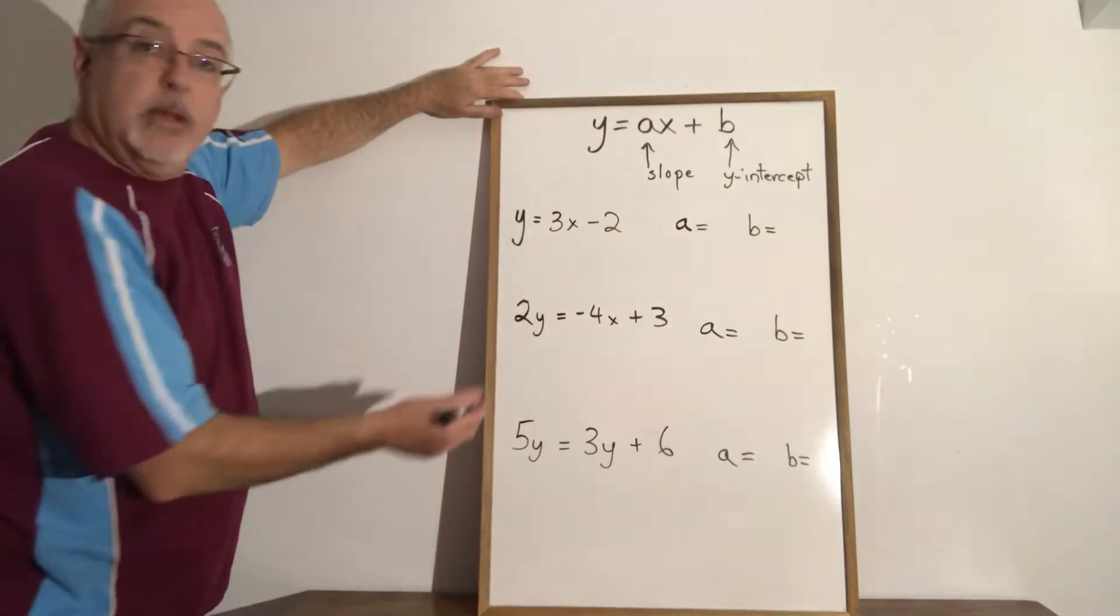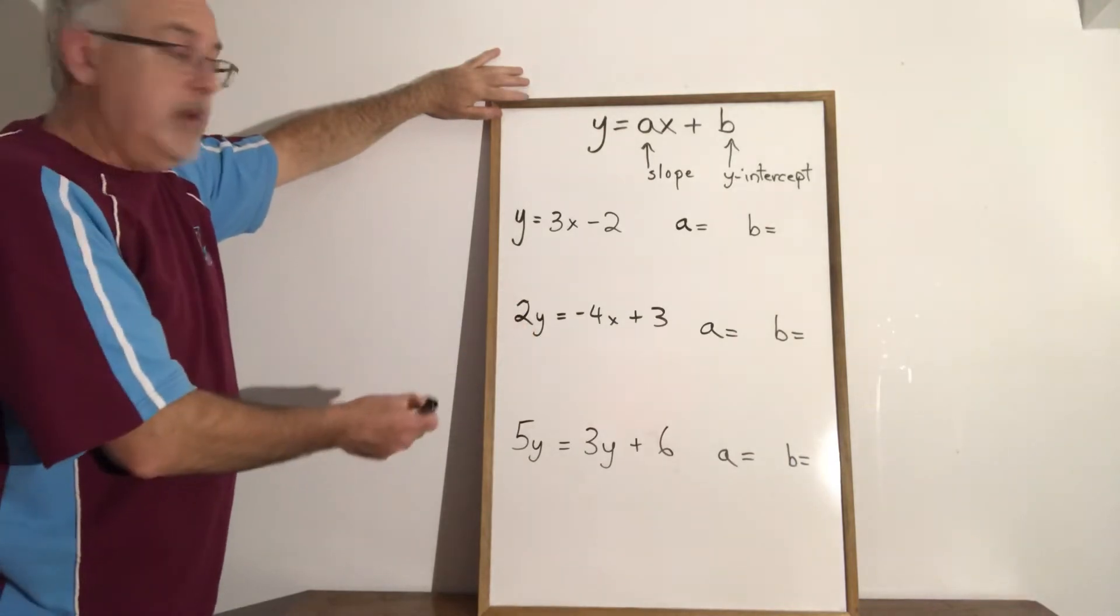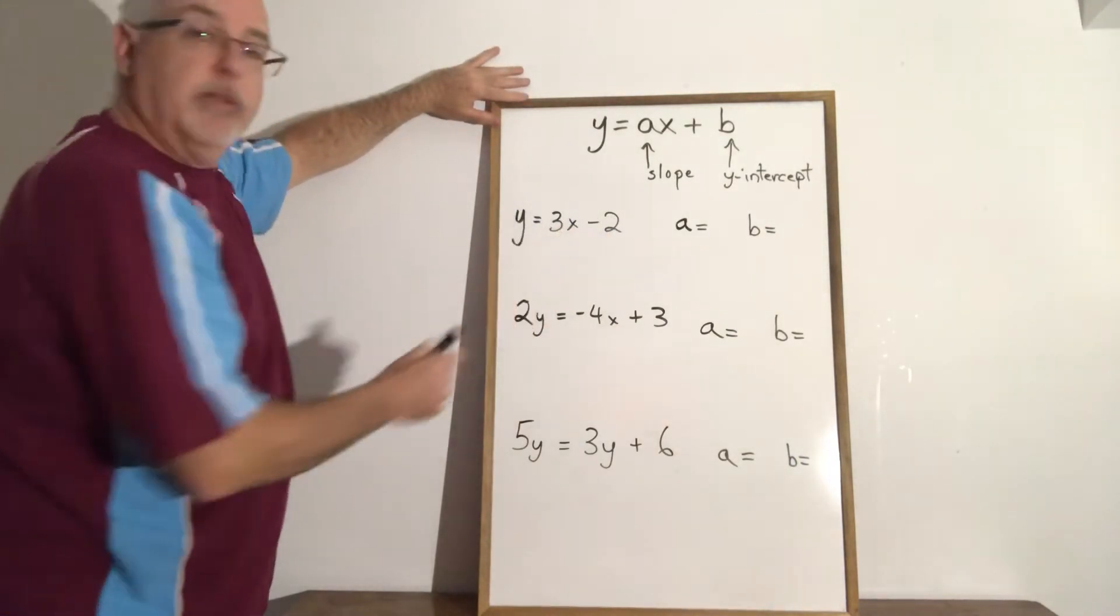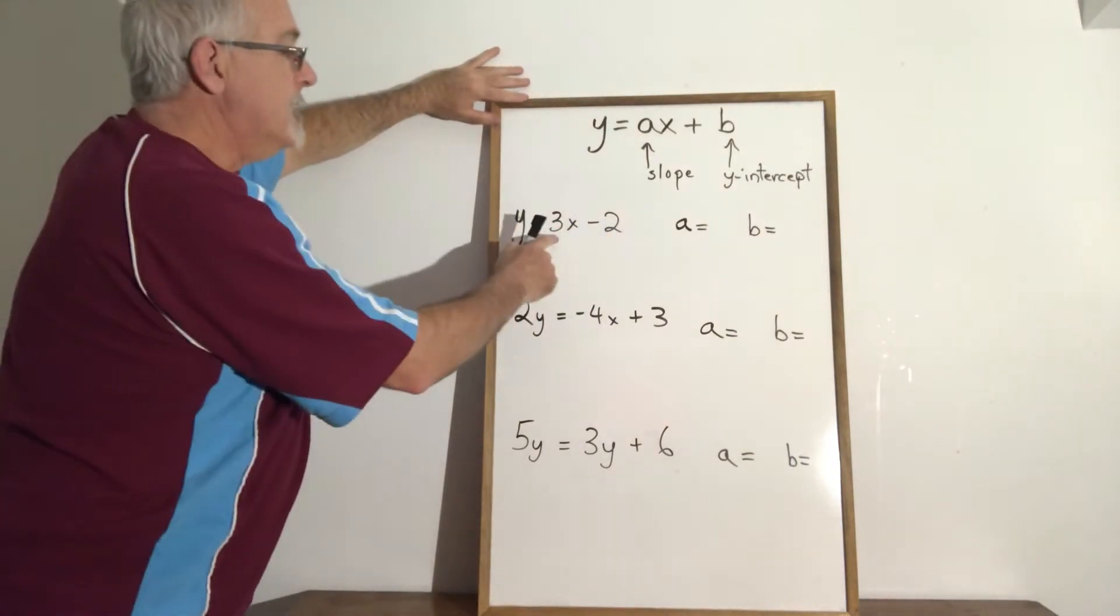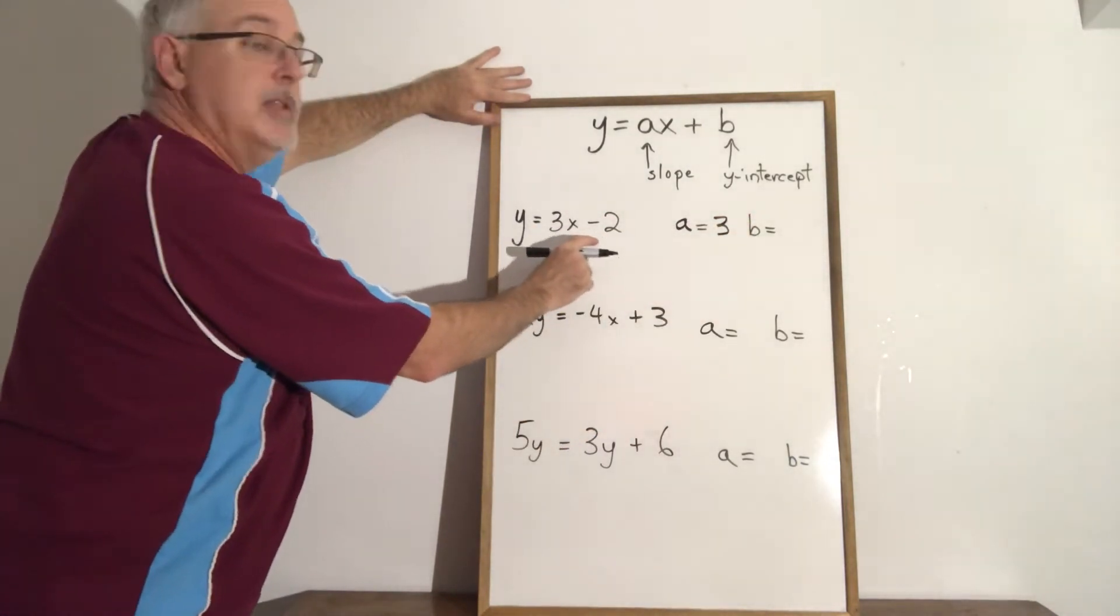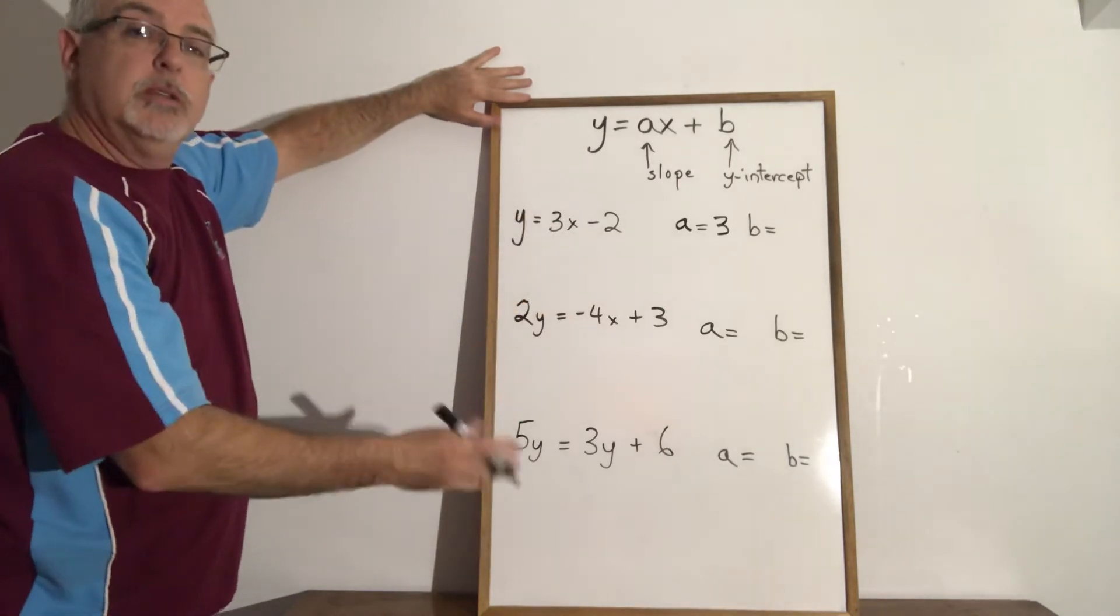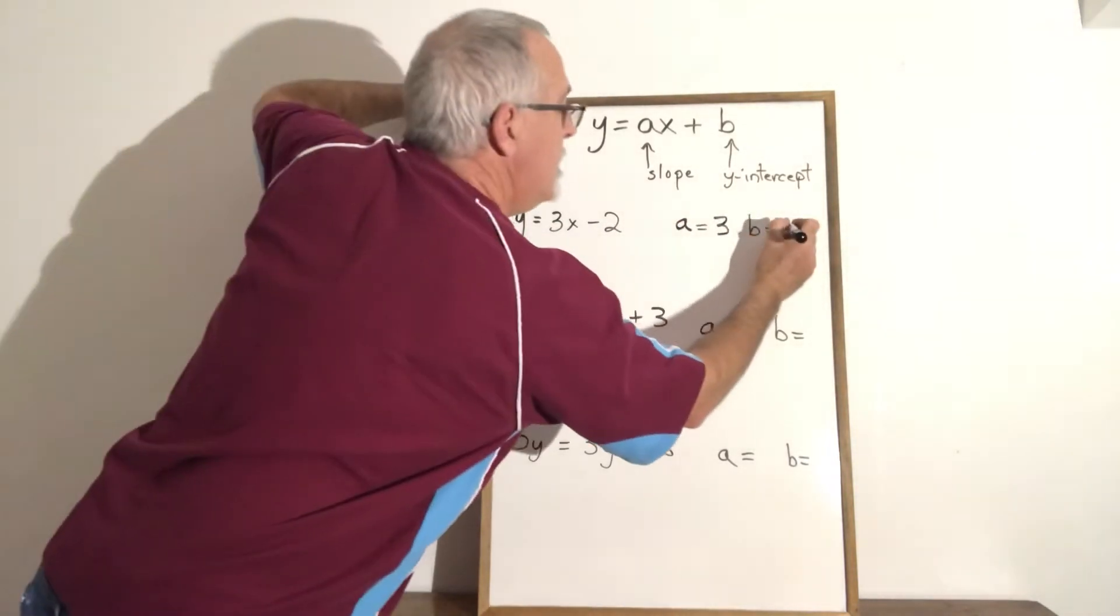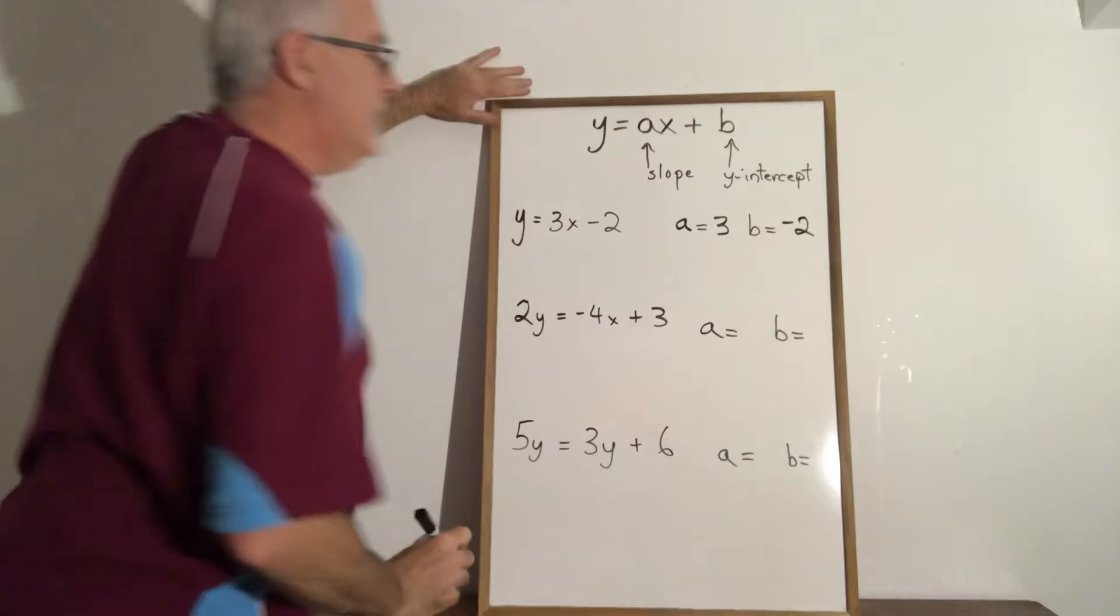So in the first example the equation is already written in that form and we can just read off the slope and the y-intercept. The slope is three, a equals three. The y-intercept is negative two. It's not only the two, the sign goes with it. So the b, the y-intercept, is negative two.